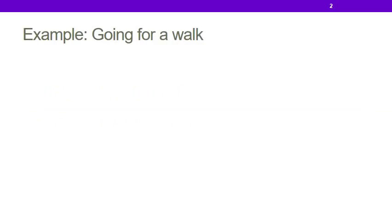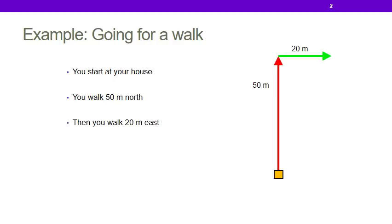To understand what vectors are and why we care about them, let's imagine you're going for a walk. You start at your house and then you walk 50 meters north. You turn to the right and you walk 20 meters east. You can ask the question, how far do you end up from your house?